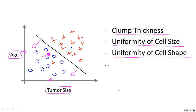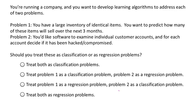Here's a quick wrap-up question. Suppose you're running a company, and you want to develop learning algorithms to address each of two problems. In the first problem, you have a large inventory of identical items. So imagine that you have thousands of copies of some identical items to sell, and you want to predict how many of these items you sell over the next three months.